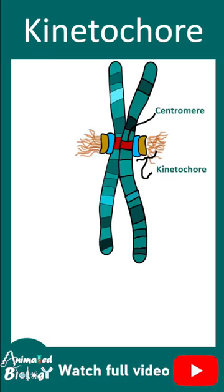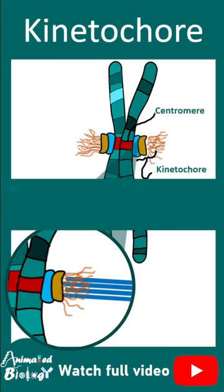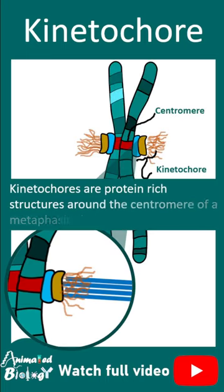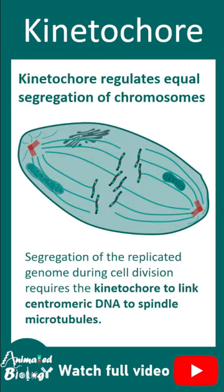Kinetochore is a protein-rich structure which is present around the centromere of a metaphasic chromosome. Kinetochore regulates equal segregation of the chromosome during cell division.